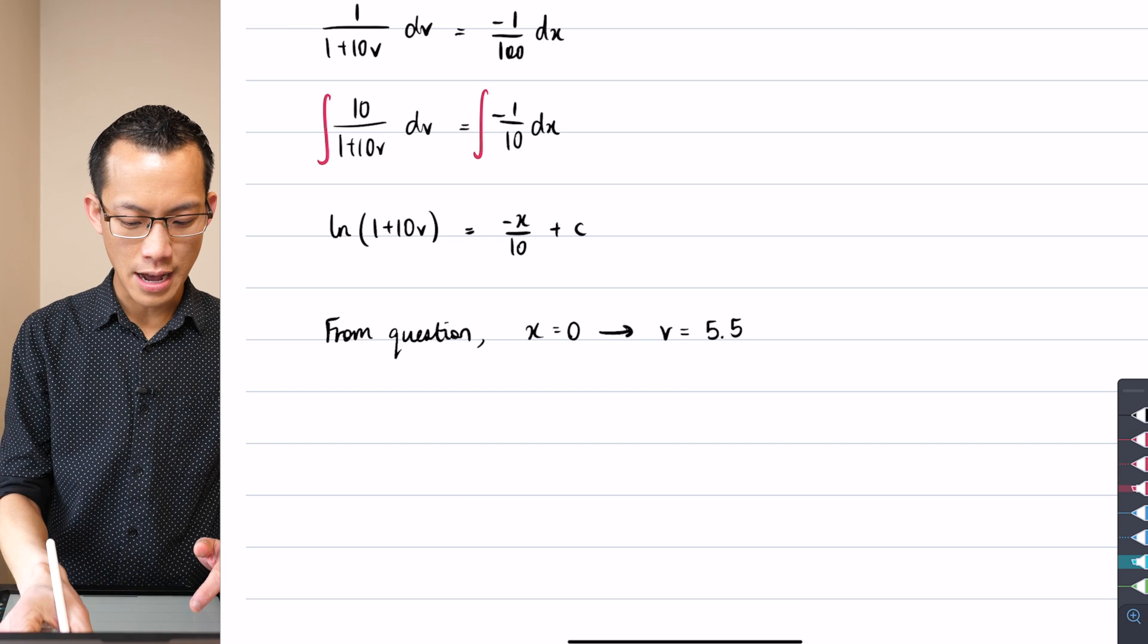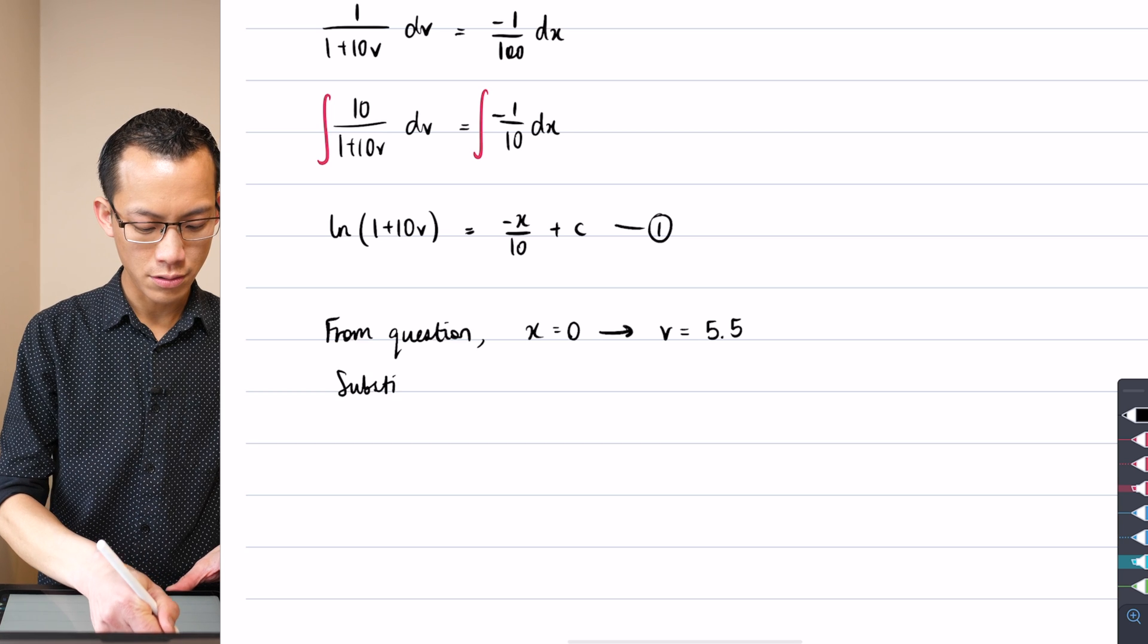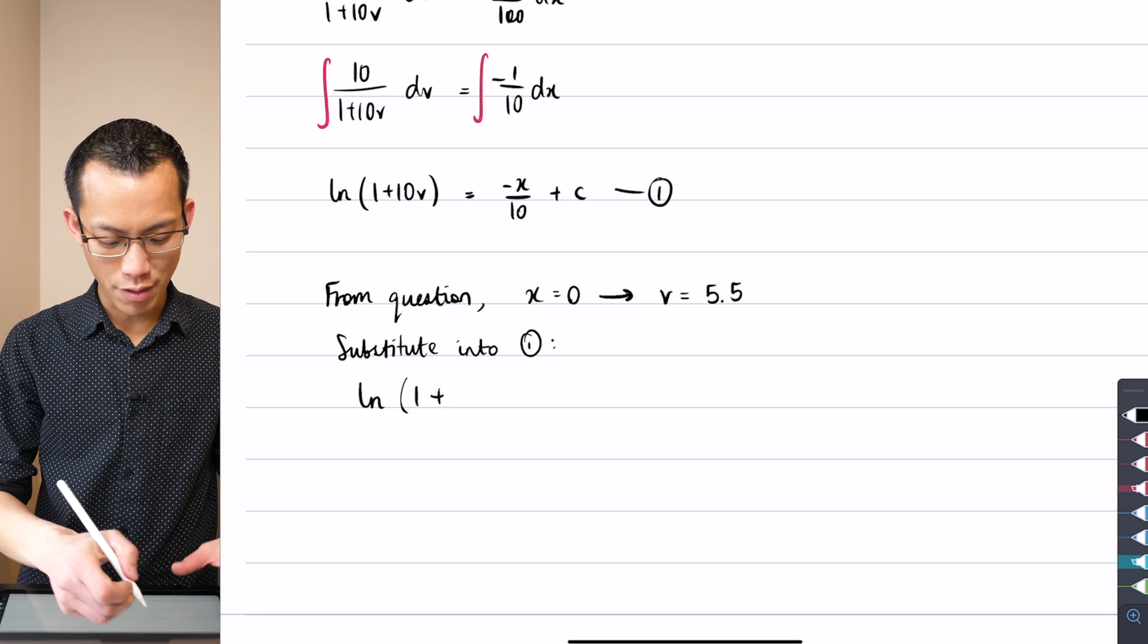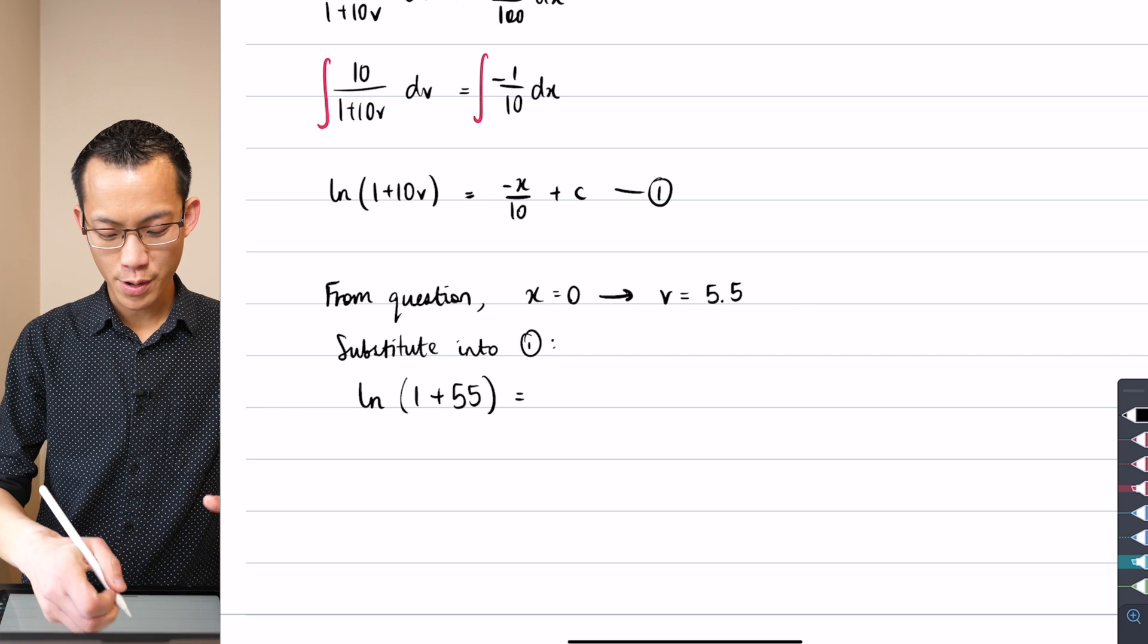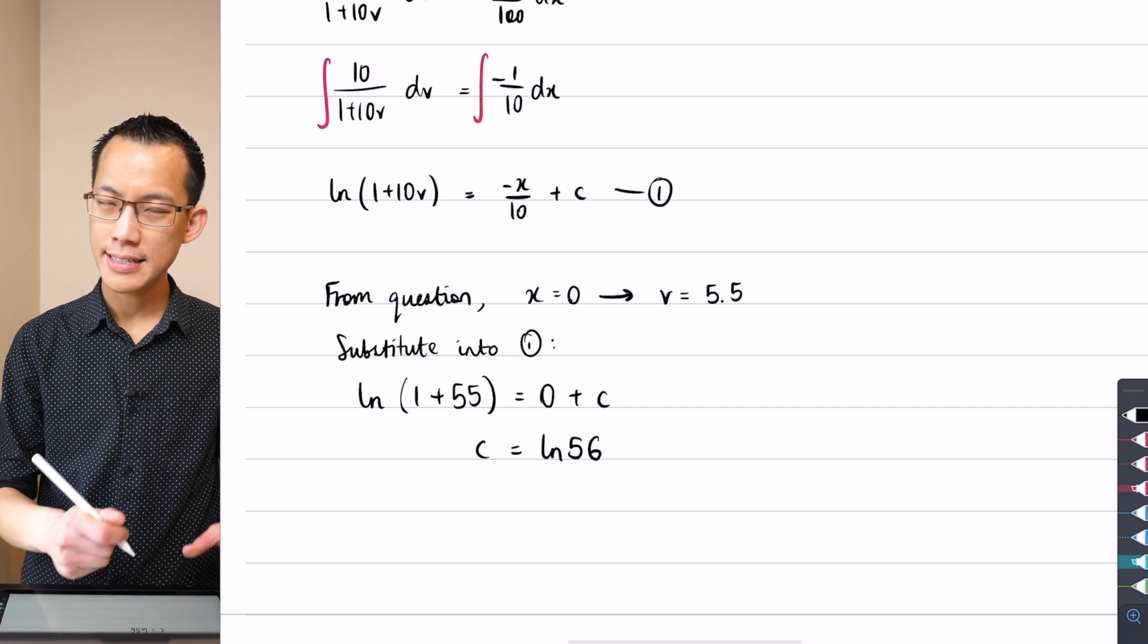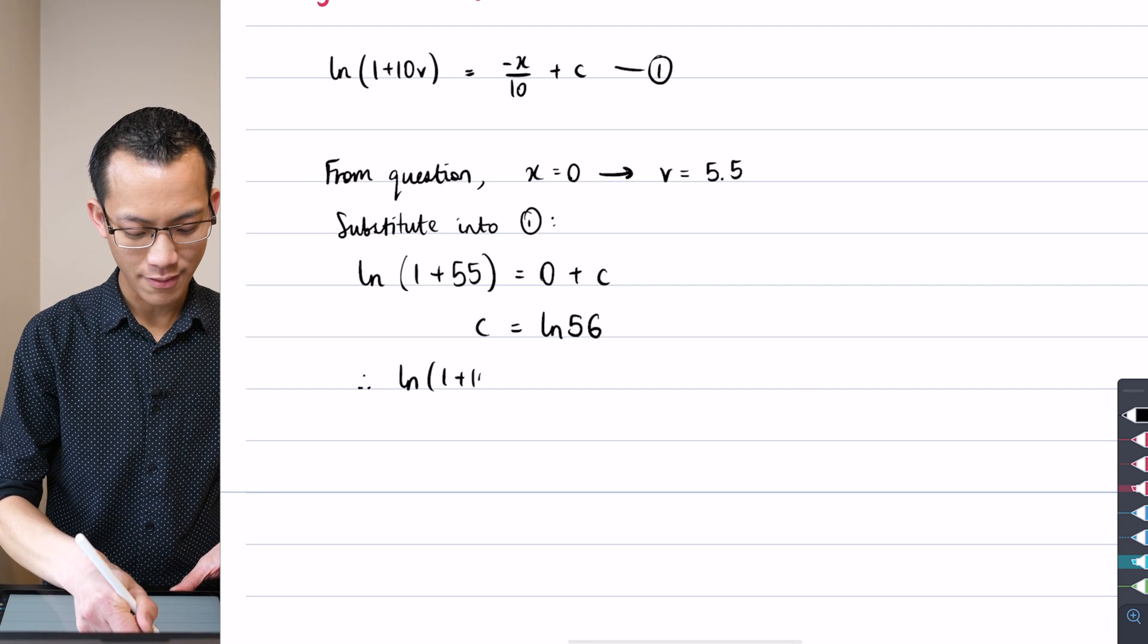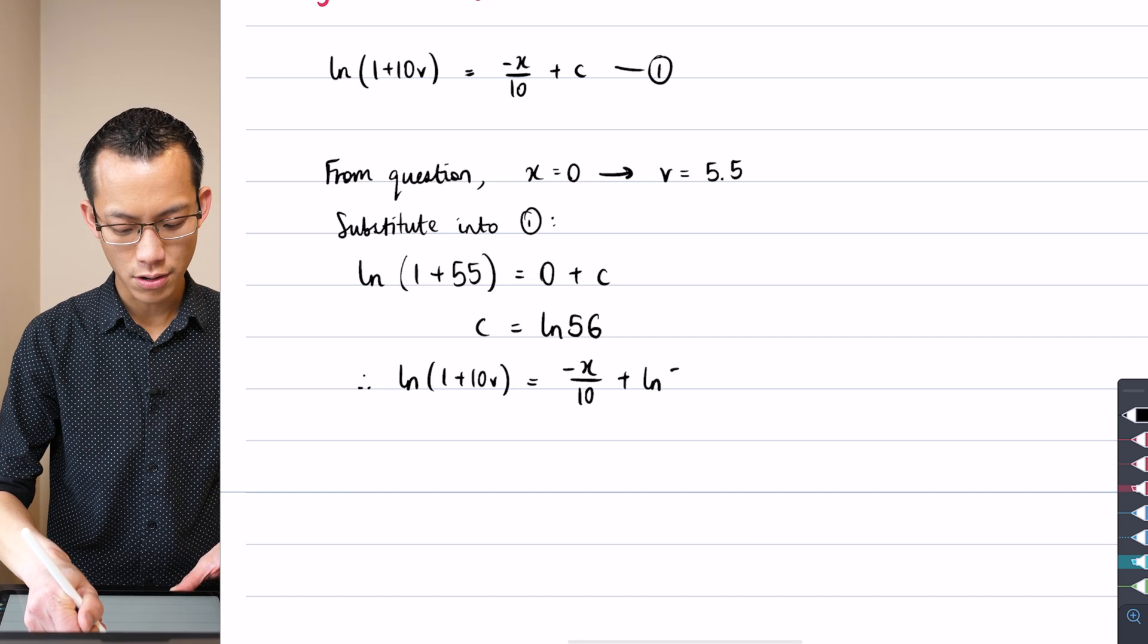So what I can do is I can say in some ways this is like the initial conditions. Initial is not quite the right word because that's a time word but I can say from the question, and it is important to put this line of working in here, x equals 0 implies that the velocity is 5.5. So I can just do a straight substitution into this equation up here. Let's call that equation 1. So I'm going to substitute those values into 1. What do we get here? Well, on the left hand side I've got 1 plus 10v. v is 5.5 so I'm getting 55 out of 10v and I'm putting in x equals 0 so I just get 0 plus c. So here's my constant. It's log of 56, whatever that happens to be.